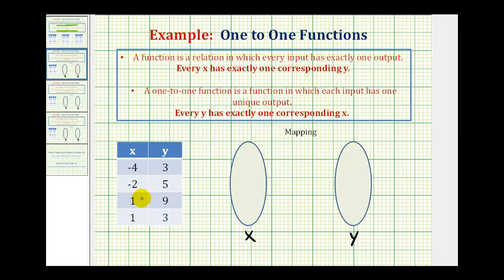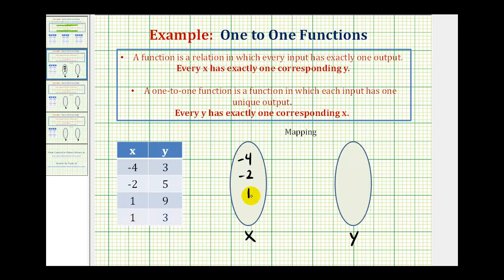To map this relation, we're going to place the set of x values, or inputs, here, and the set of y values, or outputs, here, and then map the relation. Looking at the x values, we have three unique x values: negative four, negative two, and positive one. Even though one occurs twice, we only list it once. These are the unique x values. And then for the y values, we have three, five, and nine.